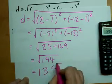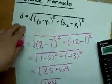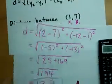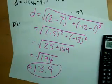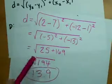So these two points on the xy plane are separated by 13.9, or about 14 units.